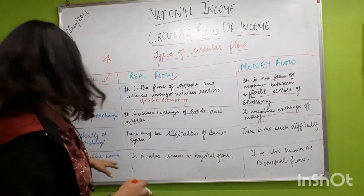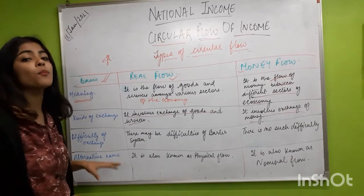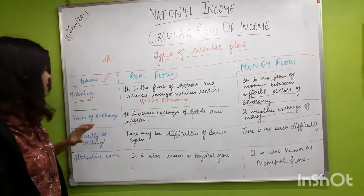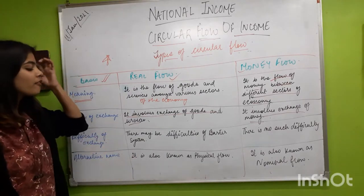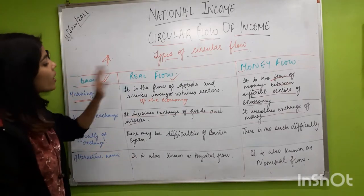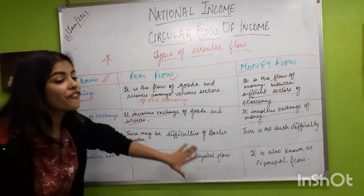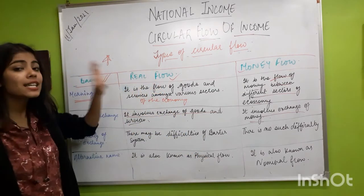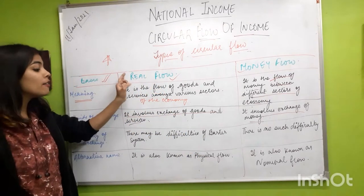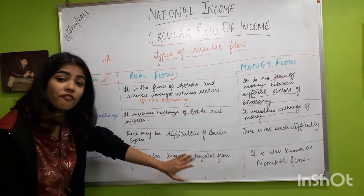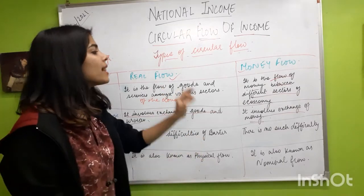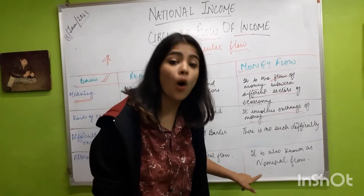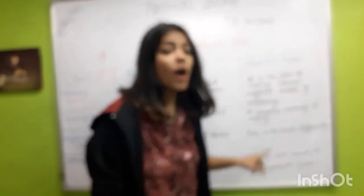One of the most important points is the alternative name. The alternative name for real flow is physical flow, and the alternative name for money flow is nominal flow. It is important to remember these alternative names, as exam questions may use physical flow and nominal flow instead of real flow and money flow.